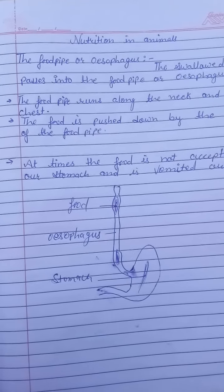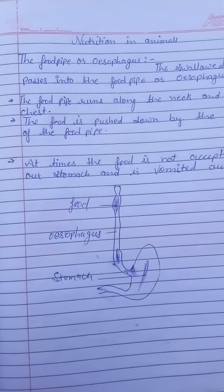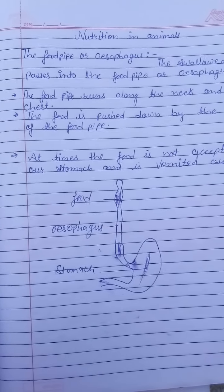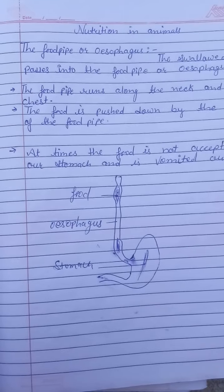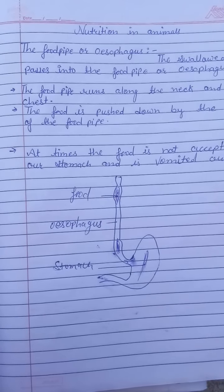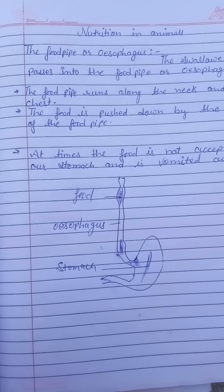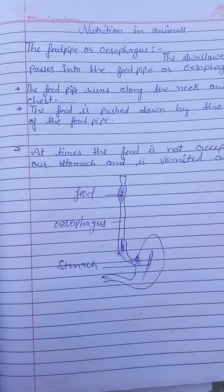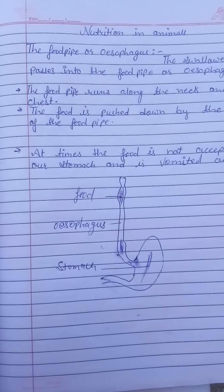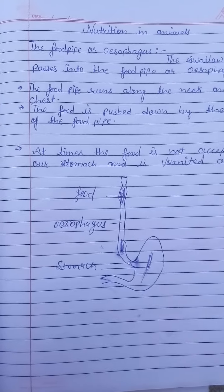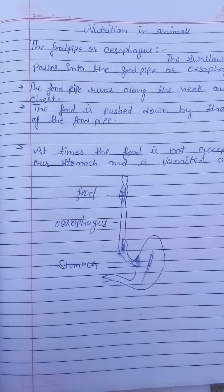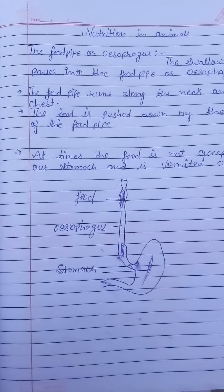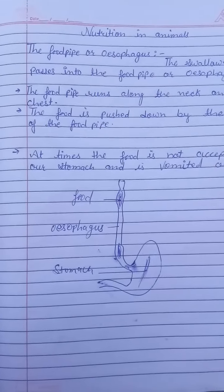In our previous video, we studied about nutrition in animals, components of food like carbohydrates, proteins, vitamins, minerals, and the parts of the elementary canal or digestive tract — buccal cavity, esophagus, stomach, small intestine, large intestine, and anus. We also studied about the buccal cavity. Today we study about the food pipe or esophagus, so let's start.